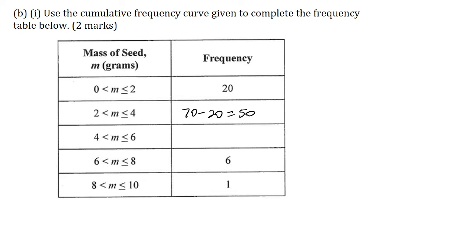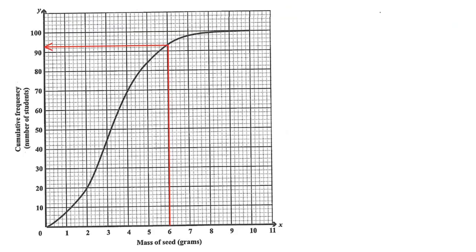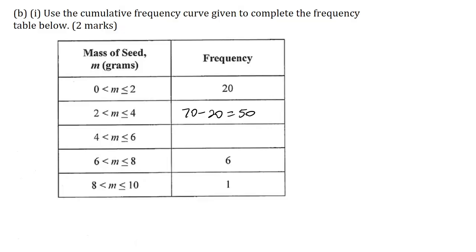Next, for no more than 6 grams, I repeat the procedure. On the x-axis I locate 6 grams, draw a straight line up to the cumulative frequency curve, then straight across to the y-axis, getting a cumulative frequency of 93 students. So this will be 93 minus the previous cumulative frequency of 70, giving 23. Notice that when I sum all the frequencies, I get n which is equal to 100.